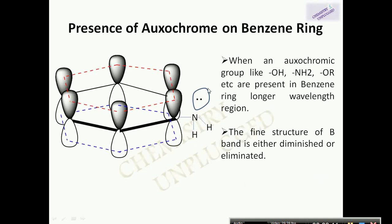Next is attachment of an auxochrome to the benzene ring. When we attach an auxochromic group like OH, NH2, or OR to a benzene ring, there is a bathochromic shift towards longer wavelength. Because these auxochromic groups have a lone pair of electrons which may conjugate with the pi orbitals of benzene. Conjugation causes a lowering in the energy gap between HOMO and LUMO orbitals, and a decrease in energy gap means an increase in the wavelength of absorption. But the fine structure of the B band is either diminished or eliminated on attachment of an auxochrome.